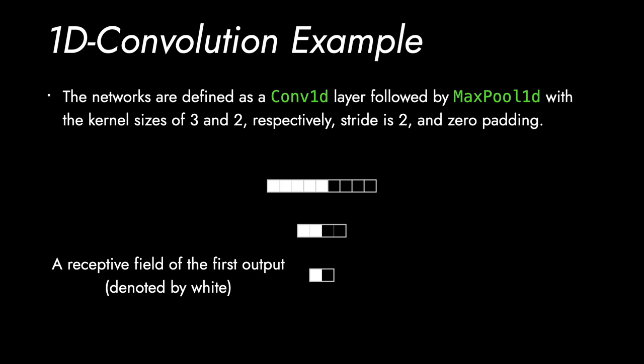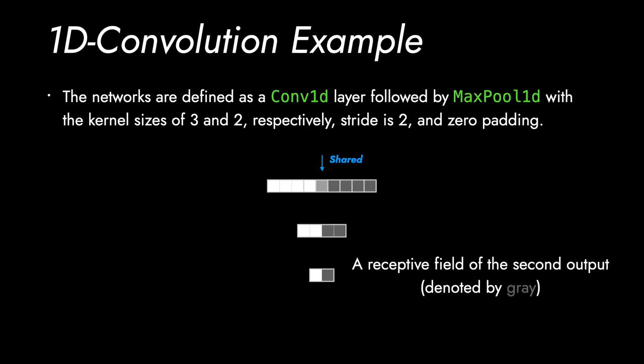For the first output element, the receptive field over the input space is the first 5 elements. For the second output element, with gray, the receptive field over the input space is the last 5 elements.